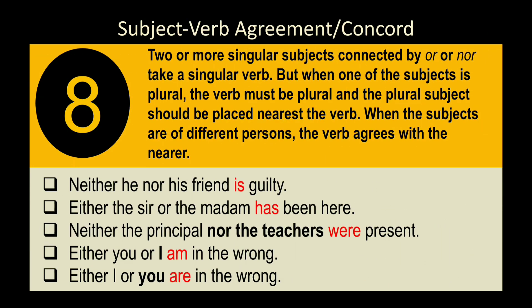Rule 8: Two or more singular subjects connected by 'or' or 'nor' take a singular verb. When one subject is plural, the verb must be plural and the plural subject should be placed nearest the verb. When subjects are of different persons, the verb agrees with the nearer subject. Examples: 'Neither he nor his friend is guilty.' 'Either the sir or the madam has been here.'